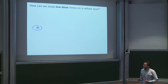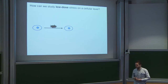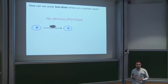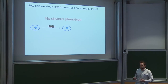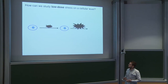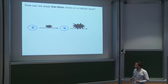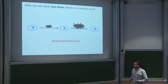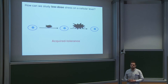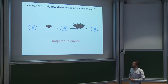If you apply a sublethal stress with no obvious phenotype, and then apply a lethal stress, most cells die — but some actually survive. This is called acquired tolerance, at least in the lab I was working in. Some people refer to it as hormesis, but that has some bad connotations.